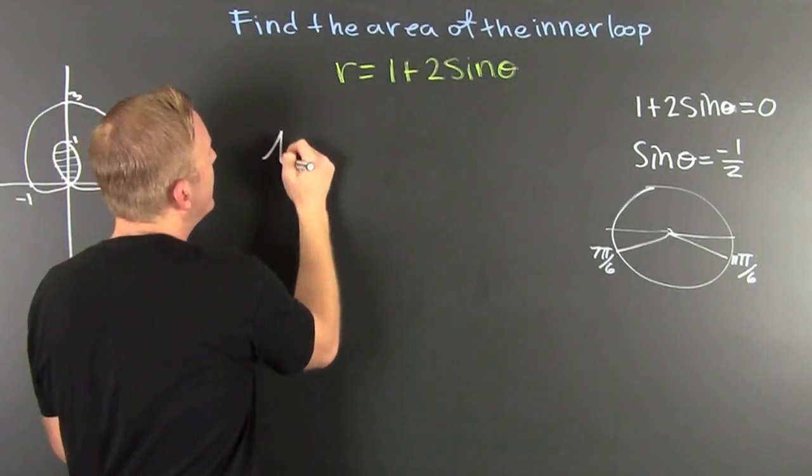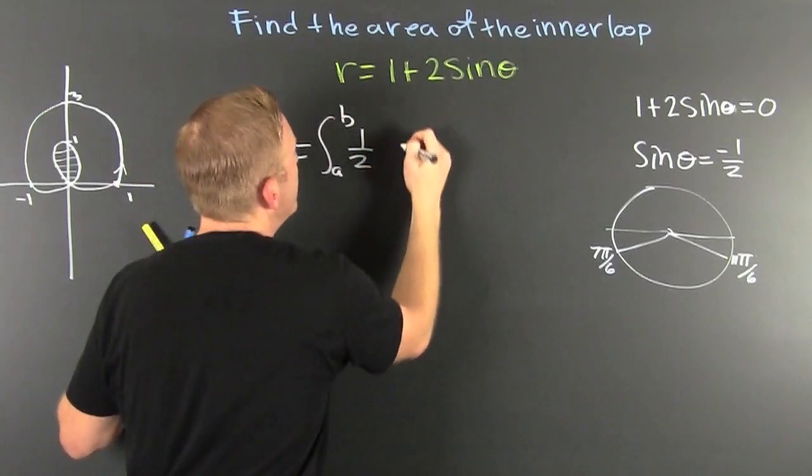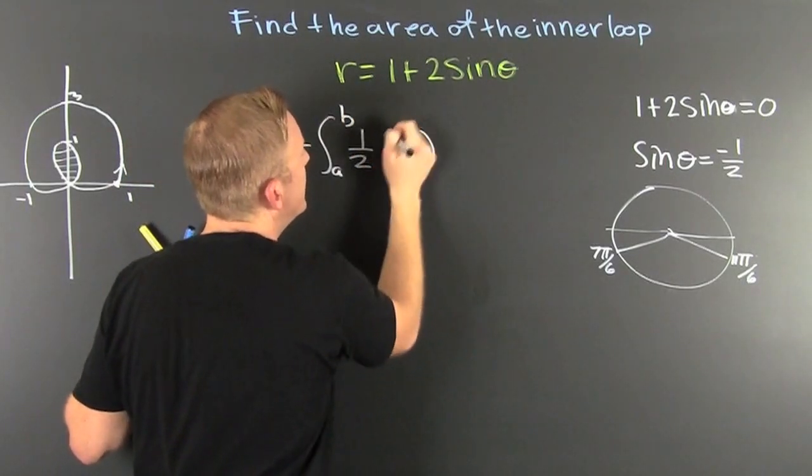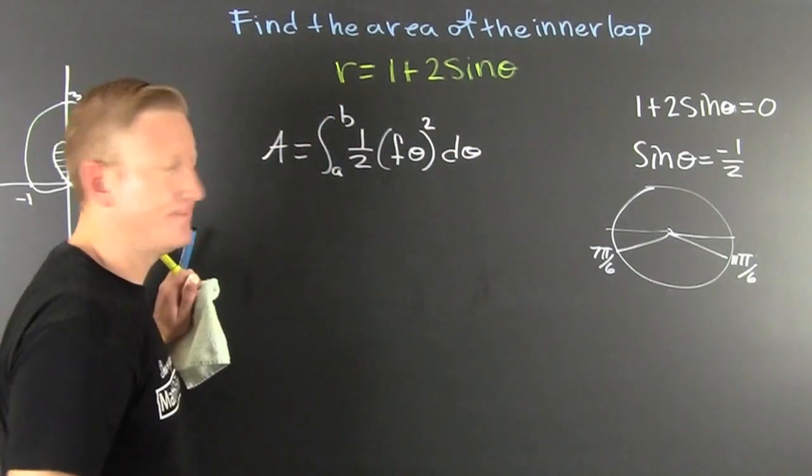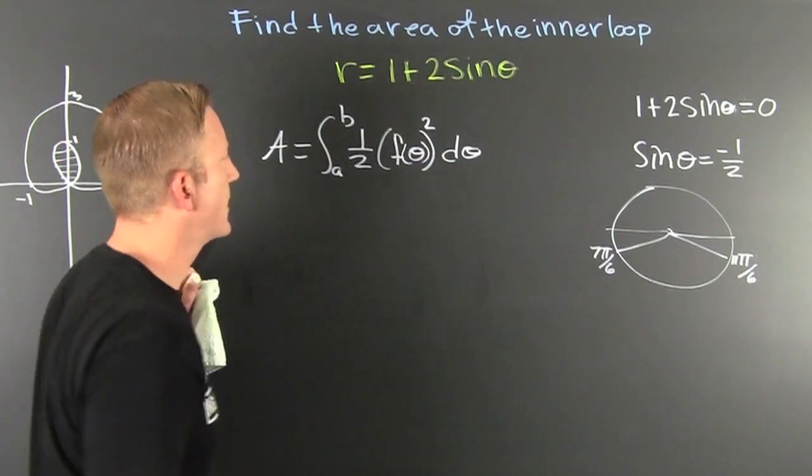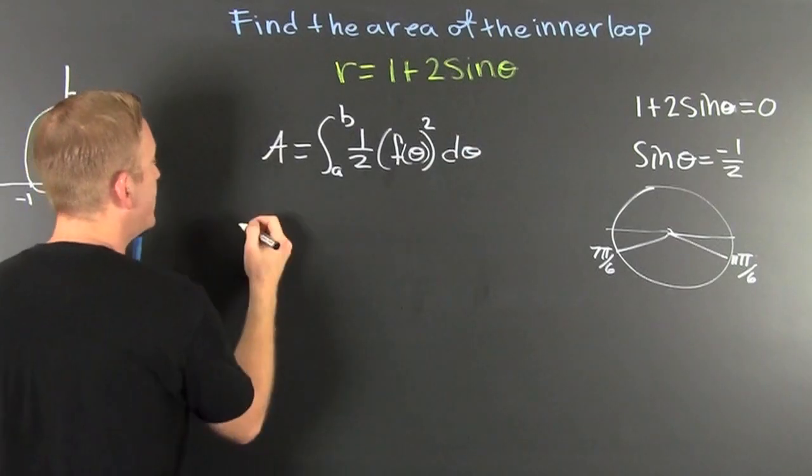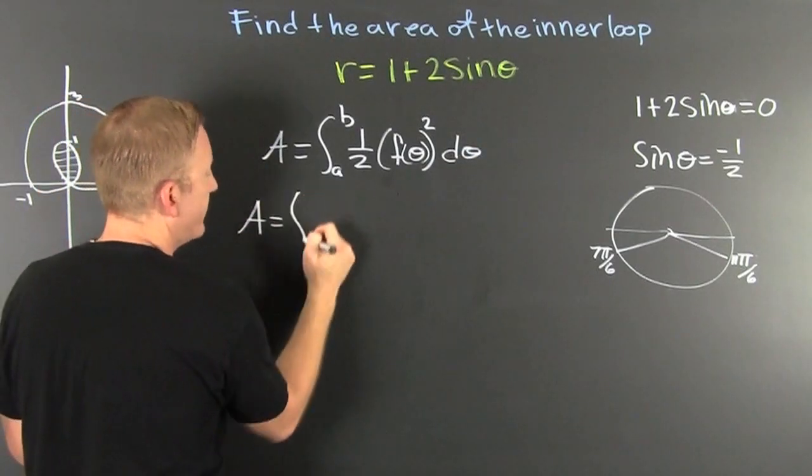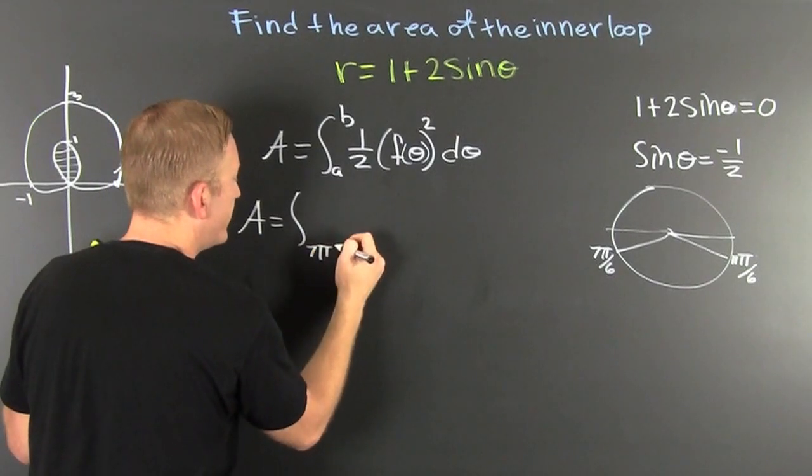Now I know that my area is going to be the integral from a to b. And then that's 1 half times f of theta. The dang thing is squared, d theta. That's the form for area for polar. And then I'm going to go and I'm going to plug all that stuff in there. So my area is going to be from down here, 7 pi over 6.